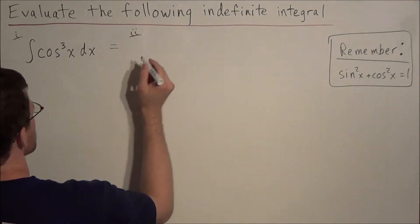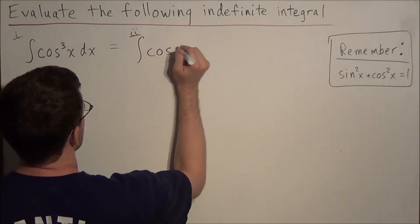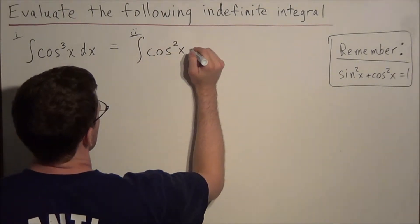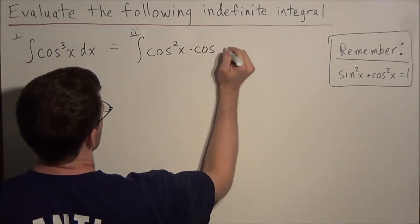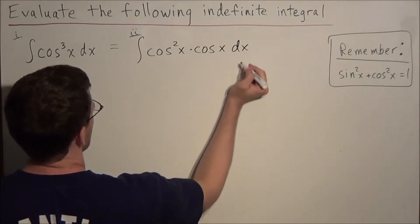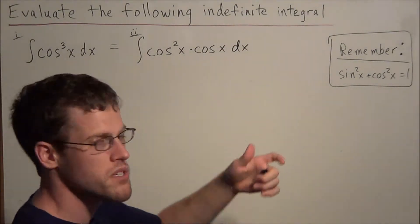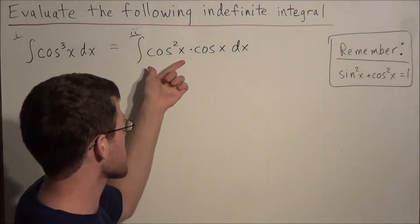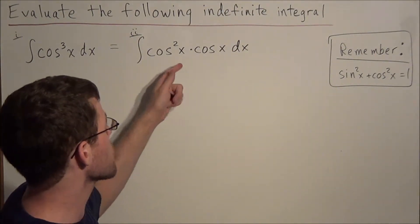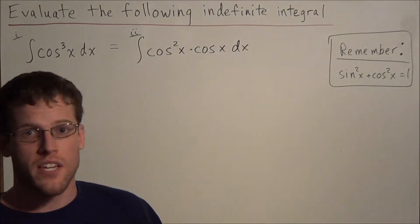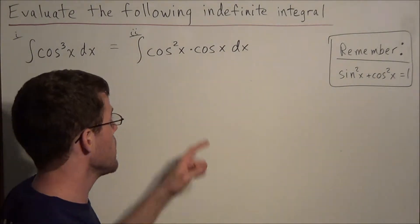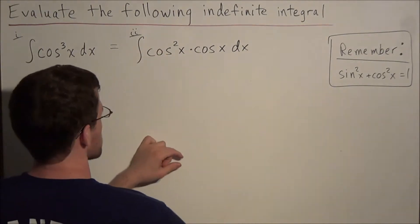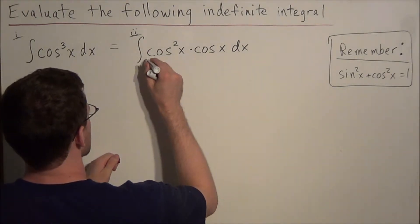For step 2, we want to rewrite this as cosine squared x times cosine x dx. Because remember, cosine to the third x just means cosine x times cosine x times cosine x. But the goal is to get an even power of cosine or sine. In this case, we're working with cosine to start. So now at this step, we want to focus in on this piece here, cosine squared x.